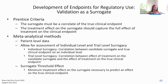When considering a meta-analysis for validation of a surrogate, there should be patient-level data from multiple clinical trials. This allows for assessment of individual-level and trial-level surrogacy. Individual surrogacy refers to correlation between the candidate surrogate and the true clinical endpoint at the individual level. Trial-level surrogacy is correlation between the effect of treatment on the candidate surrogate and the effect of treatment on the true clinical endpoint. Having individual patient-level data also allows for determination of the surrogate threshold effect — the treatment effect on the surrogate needed to predict an effect on the true clinical benefit.